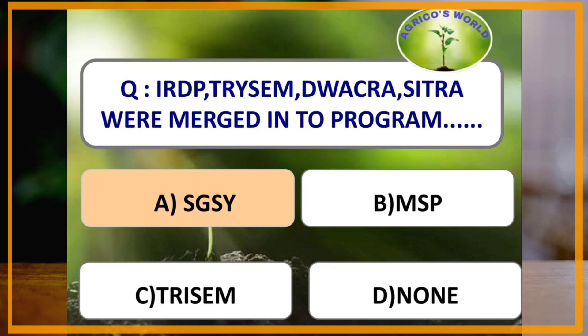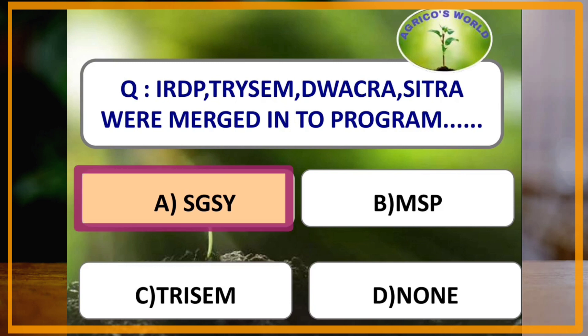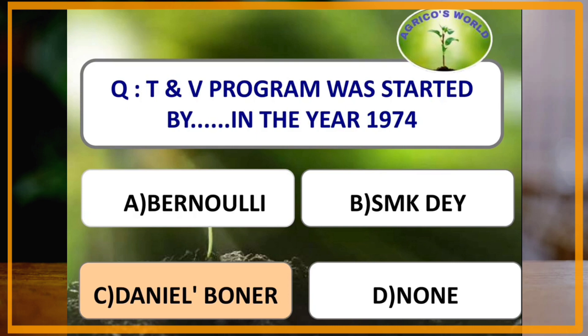IRDP (Integrated Rural Development Program), TRYSEM (Training of Rural Youth for Self-Employment), DWACRA (Development of Women and Children in Rural Areas), and SITRA (South India Textile Research Association) were merged into a group called SGSY — Swarna Jayanti Gram Swarojgar Yojana. TNV Program was started by which scientist in the year 1974?